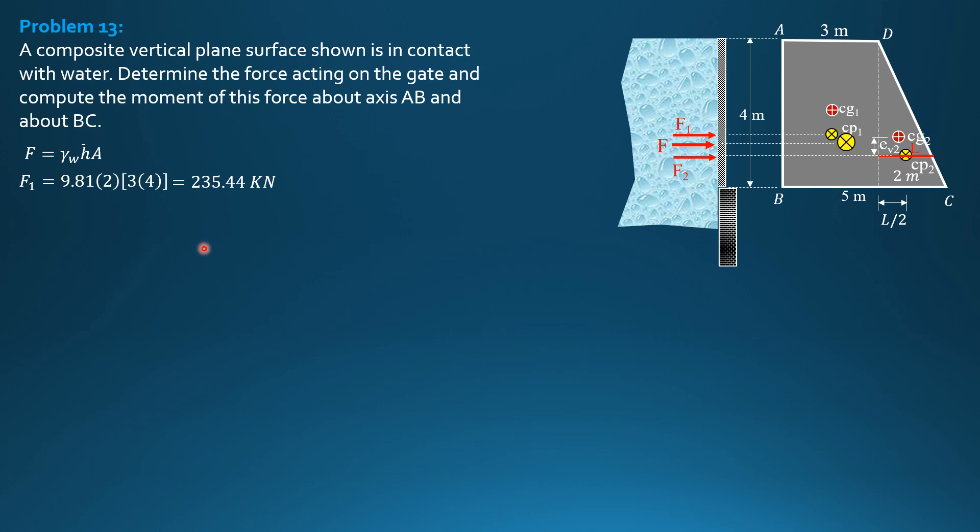F2: bar H2, bar H for the triangle, is 2/3 of 4, so 8/3. Then the area is 1/2 of 2 times 4. So F2 is 9.81 times 8/3 times 1/2 times 2 times 4. So F2 is 104.64 kilonewtons.